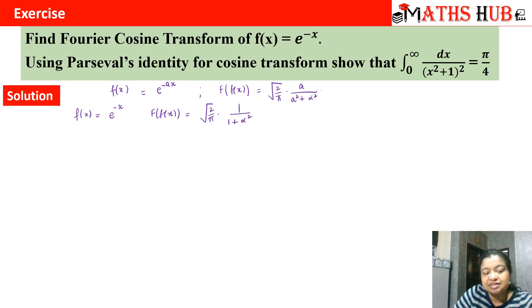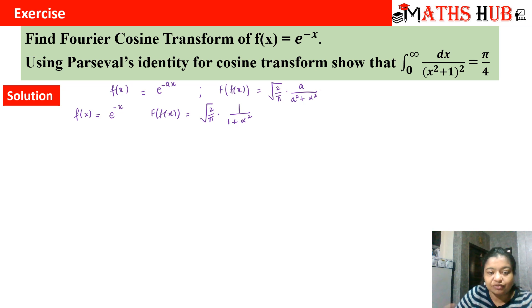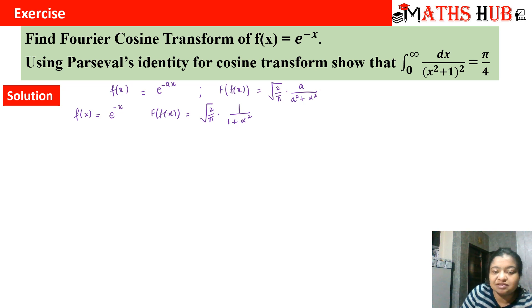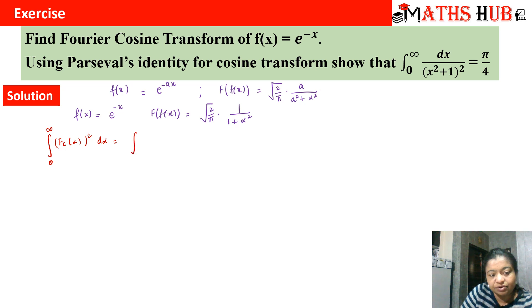Now we apply Parseval's identity. There are two formulas: one when the functions are distinct f(x) and g(x), and one when the functions are the same, giving |f(x)|². Since it is a cosine transform, we apply Parseval's identity for cosine transform. To determine which of the two formulas to use, we look at the integral to be evaluated. Since the denominator carries a square term, we always use the squared formula: the integral from 0 to infinity of |f_c(α)|² dα equals the integral from 0 to infinity of |f(x)|² dx.